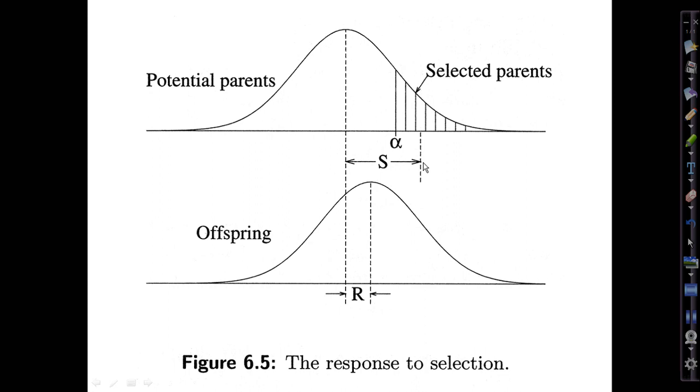Then S, the selection differential, is defined as the mean of all the selected parents, the mean of these individuals in the upper tail of the distribution, minus the mean of the population they came from. So this S is how much bigger the mean of the selected breeding parents is compared to the mean of the population as a whole.